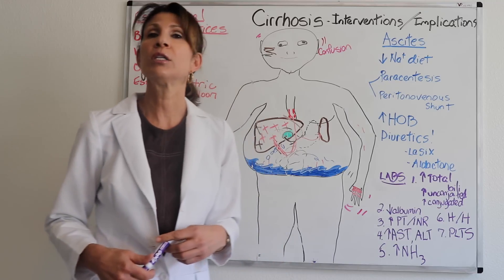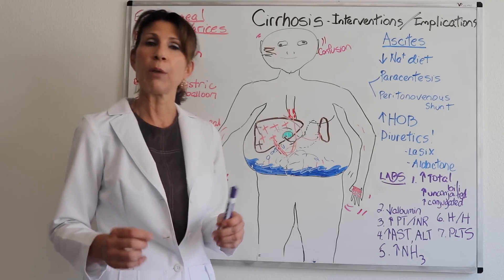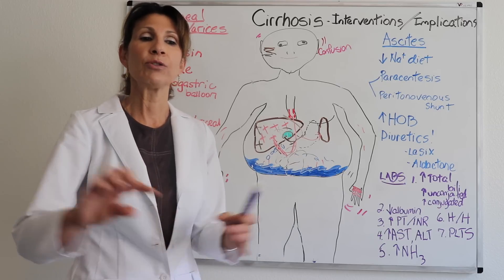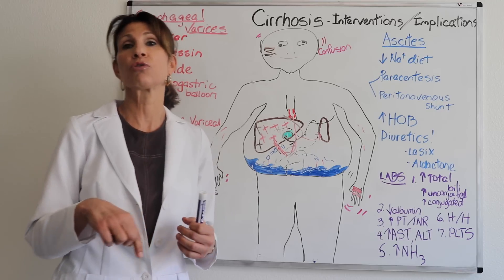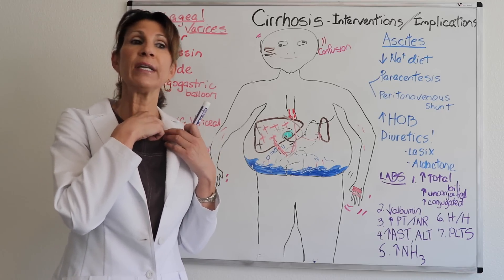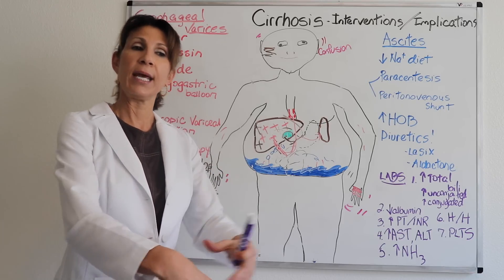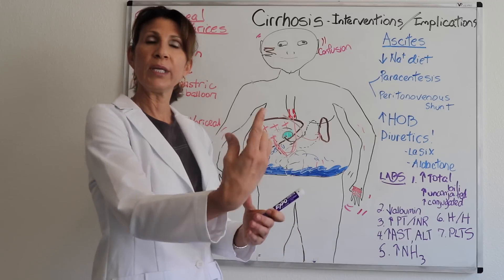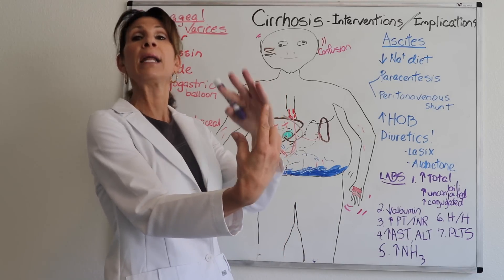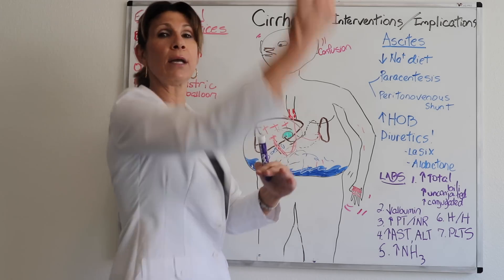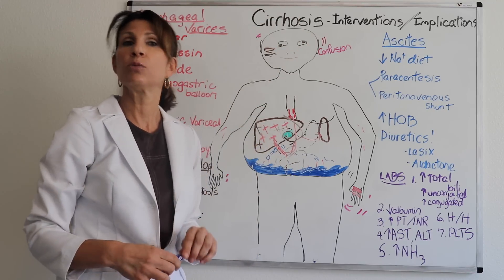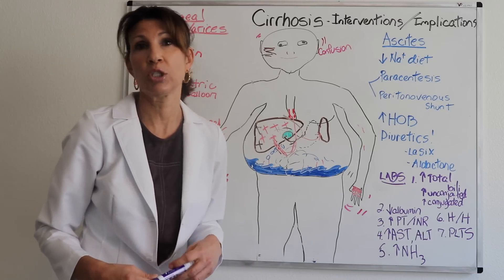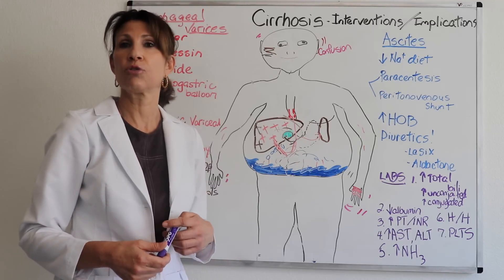A peritoneovenous shunt is used in extreme cases. It allows redistribution of peritoneal fluid back into the central circulation. The shunt is surgically guided subcutaneously from the inferior vena cava into the peritoneal space. When the patient takes a deep breath and intrathoracic pressure increases, fluid migrates upward through a one-way valve into the right atrium. A complication is that if too much fluid accumulates before placement, redirecting it too quickly can cause severe fluid volume overload.